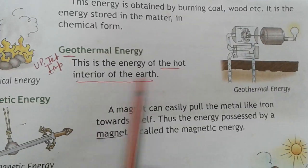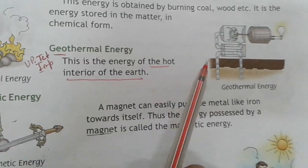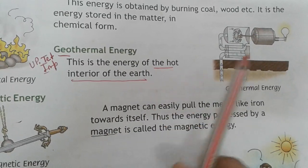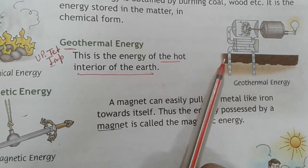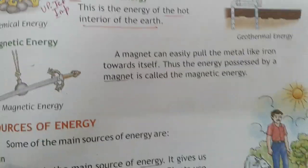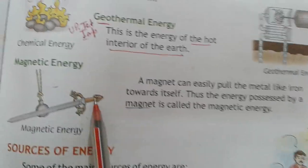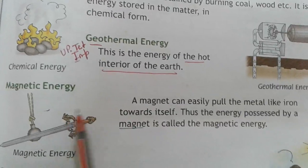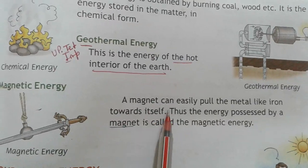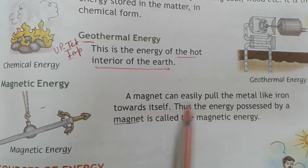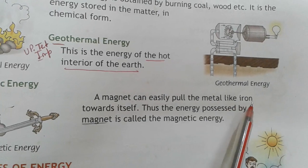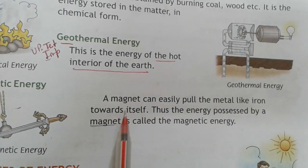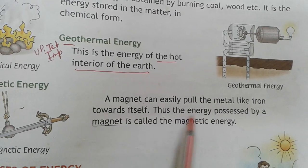Geothermal energy: this is the energy of the hot interior of the earth. Magnetic energy: a magnet can easily pull metals like iron towards itself.